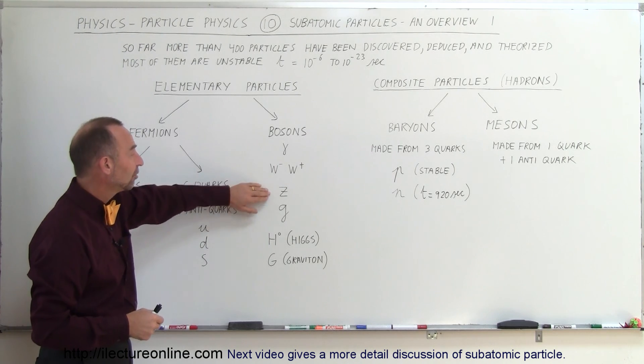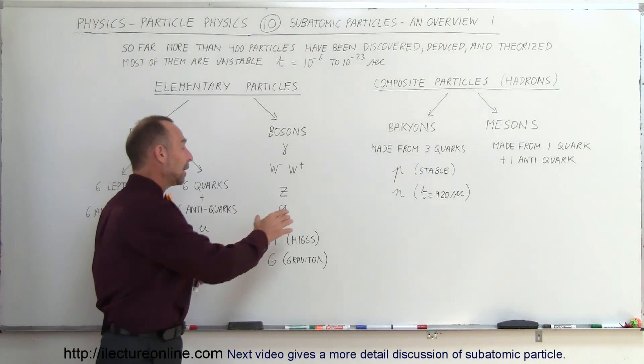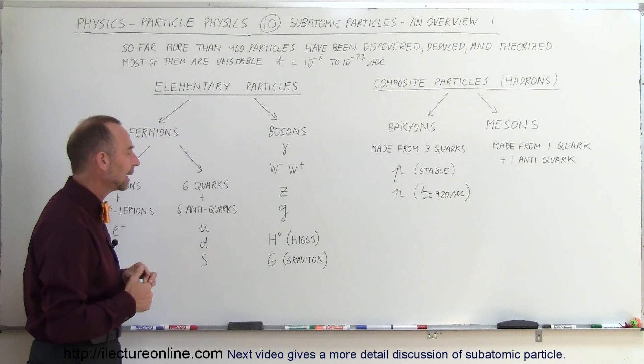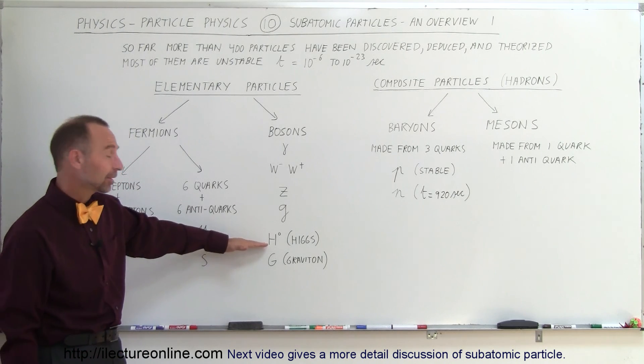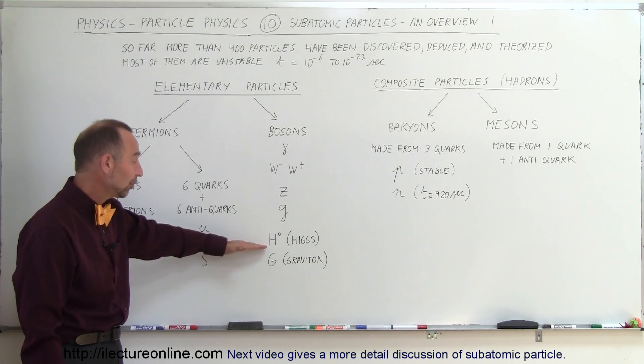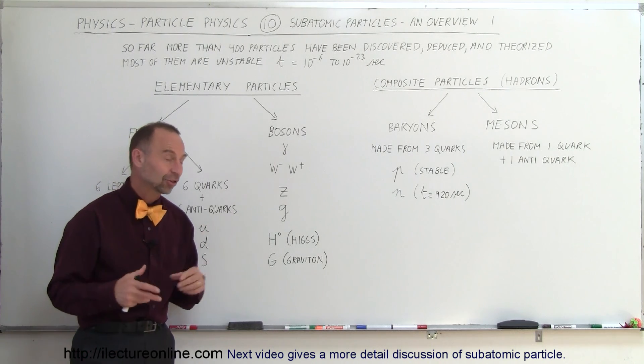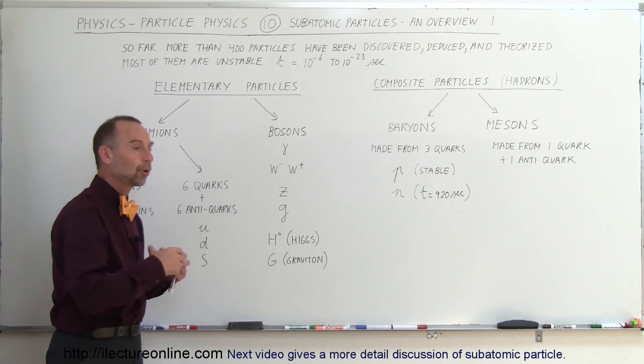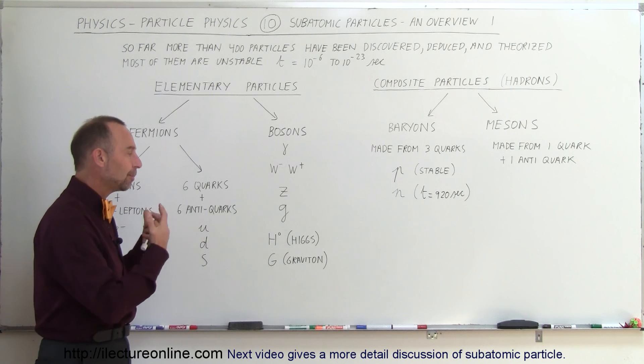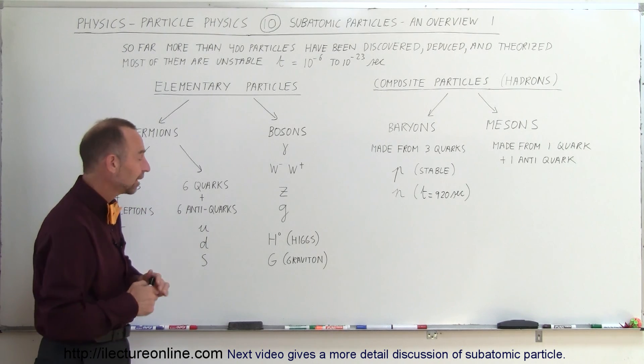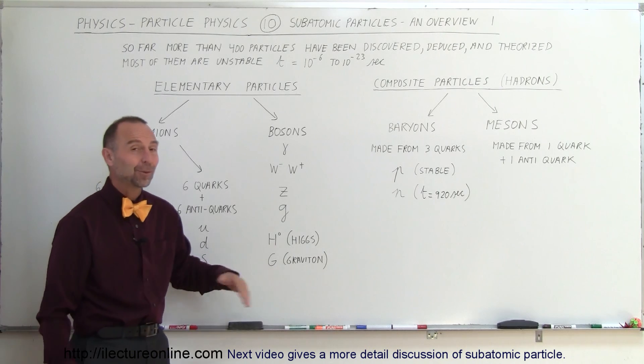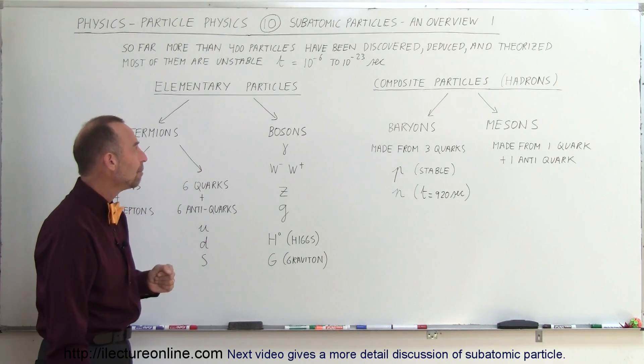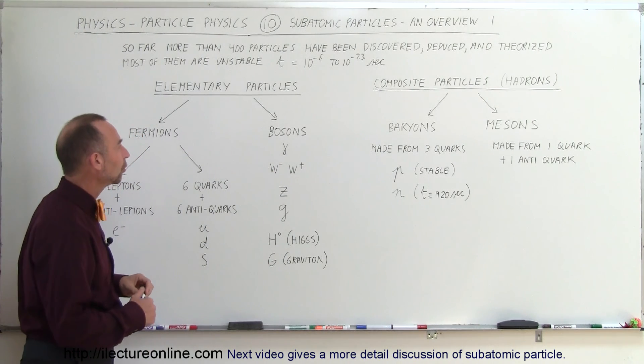We also have the W and the Z bosons. They also are intermediate particles. And then we have what we call the gluons, and the gluons is what keeps the quarks together. But again, we'll talk about that later in more detail. And then, of course, we have the really famous particle that was discovered in 2012 in CERN at the very large accelerator. And we believe that the Higgs boson is responsible for causing the Higgs field, which gives the particles mass. And so, we'll get into that a little bit later. And, of course, we have the hypothetical graviton, which we haven't found yet, but we feel there probably is such a thing.